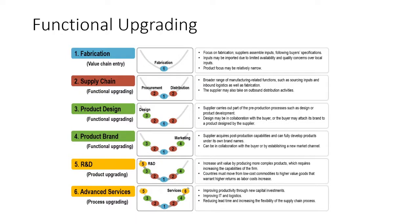Functional upgrading, as mentioned in the article, has a very significant graph that's shaped like a U — like a bowl. It ranges from step one to six: fabrication, supply chain, product design, product brand, R&D, and advanced services.